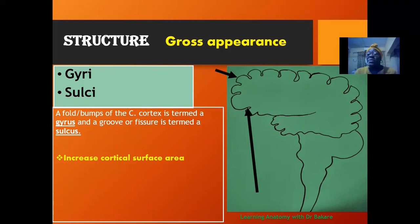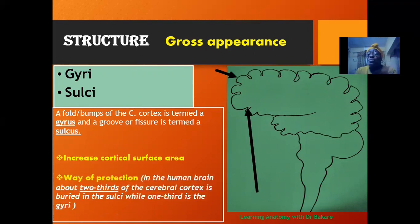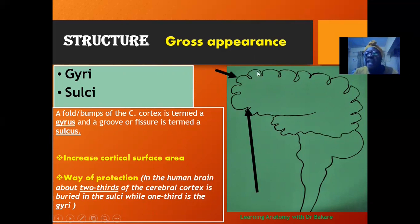More space is created for the deposition of neural networks to execute specific functions. Also, in a way, to protect the cerebral cortex, because we have regions that are embedded within it. Two-thirds of the entire cerebral cortex are embedded within, forming the sulci, while one-third forms the gyri. Some regions are embedded as a way of providing protective covering and structural support to the cerebral cortex.